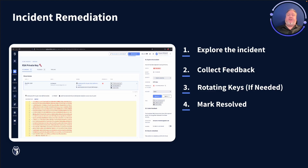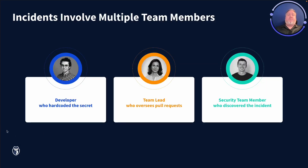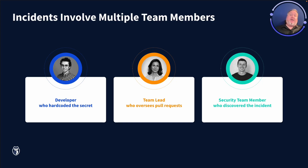The final step in remediation from the GitGuardian dashboard point of view is marking the incident resolved. Resolving incidents normally involves multiple team members — this is true of very small teams as well as teams of tens of thousands of developers working all over the world. If we think of a typical incident, you can think of a developer who introduced a hard-coded secret somewhere into the code base, someone else who approved that pull request or enabled that code to make it through the CI/CD pipeline, and eventually that secret is discovered by a security team member, who then needs to plan remediation.